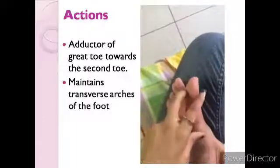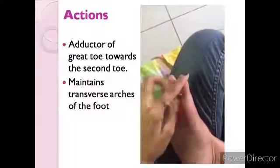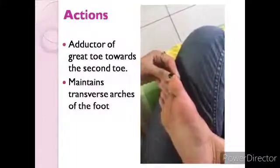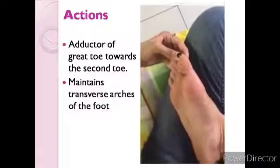When the oblique head moves towards the transverse head, this produces adduction of the great toe towards the second toe.